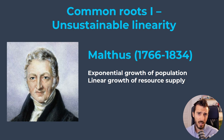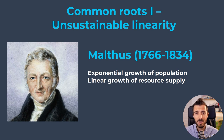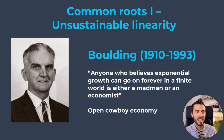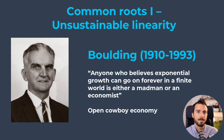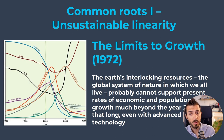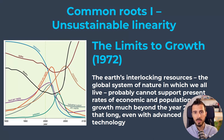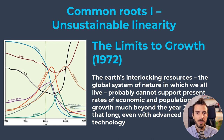We can see this from Malthus saying that exponential population growth but linear growth of resource supply might lead to collapse, to Kenneth Boulding saying that anyone who believes exponential growth can go on forever in a finite world is either a madman or an economist — dubbing this the 'open cowboy economy' where we take as much as we want and then discard it. The limits to growth report further highlighted how our linear economy is unsustainable, which might result in some sort of collapse in the future. Numerous researchers from different fields all agree that today's linearity is unsustainable.